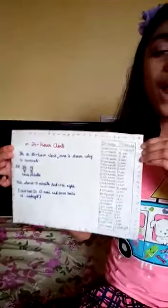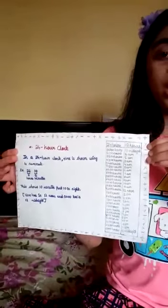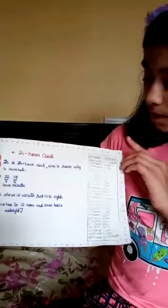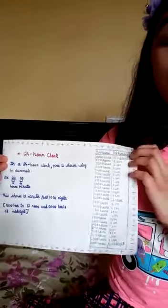So next we will go for 24 hour clock. In a clock, there are two types: 12 hour clock and 24 hour clock. 12 hour clock you have all seen. But 24 hour clock you can see in mobiles.